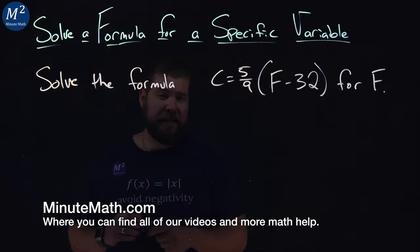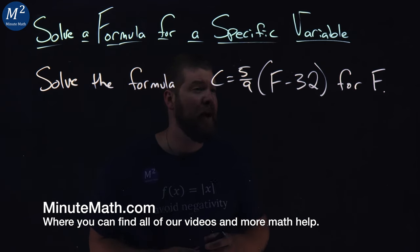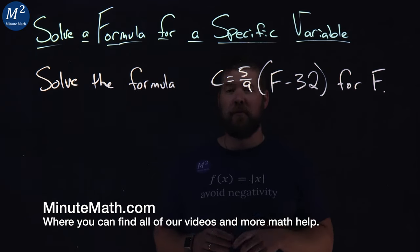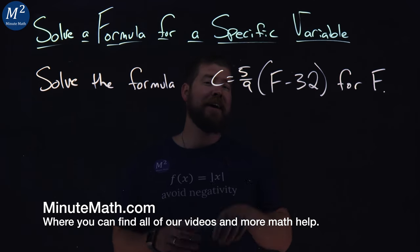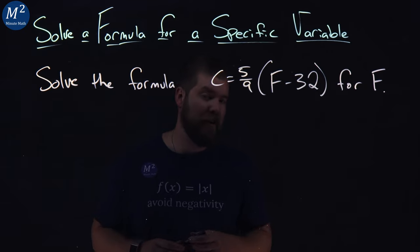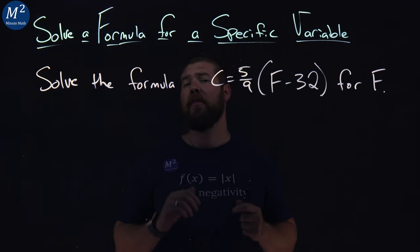Now we're given this formula here. C equals 5 ninths times F minus 32, and we need to solve it for F. Hopefully you know what these values mean. C stands for Celsius and F stands for Fahrenheit, and here's a formula that converts the two.